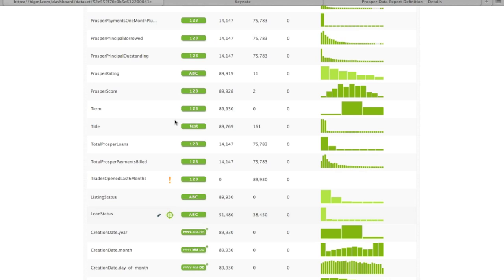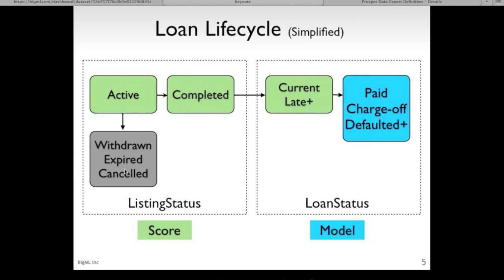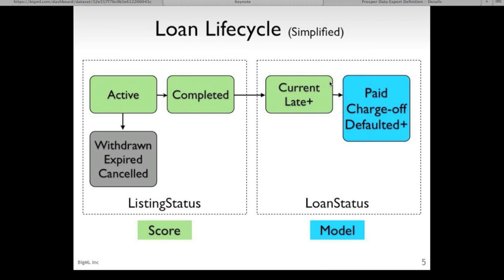To understand what these two status fields mean, let's take a quick sidetrack and look at the Prosper loan life cycle. When a member creates a listing — that is, they want a loan — the listing immediately goes into an active state, which allows investors on Prosper to bid on that loan. At the end of the bidding window, the loan can be in one of two states: it can either be withdrawn, expired, or canceled — meaning the listing has not progressed to become a loan — or the listing can progress to completed, meaning it received enough bids to become funded, at which point the listing becomes a loan. The loan then has a status reflecting how well payments are being made — either current or late — and eventually achieves a final disposition of paid, charged off, or one of the three types of default.